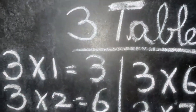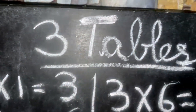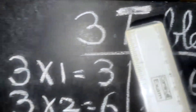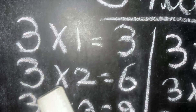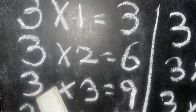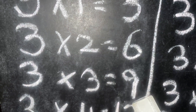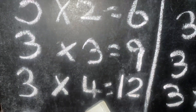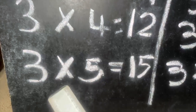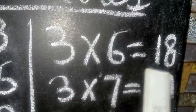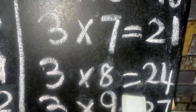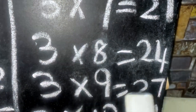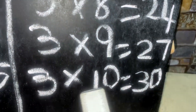Hello guys, today we are going to learn three tables. Three into ones are three. Three into twos are six. Three into threes are nine. Three into fours are twelve. Three into fives are fifteen. Three into sixes are eighteen. Three into sevens are twenty-one. Three into eights are twenty-four. Three into nines are twenty-seven. Three into tens are thirty.